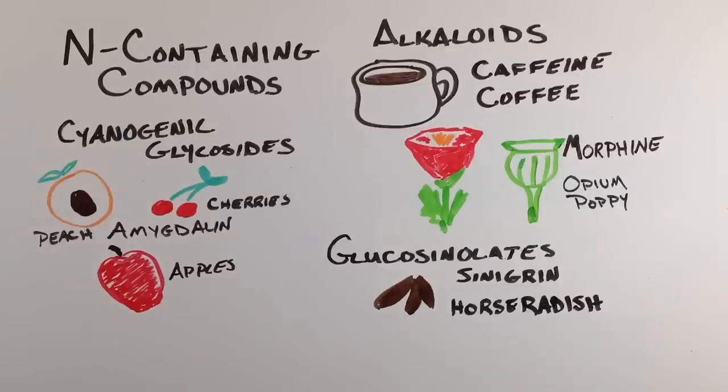Glucosinolates, such as sinigrin, found in horseradish and many mustards, also affect the digestive tract but have a particularly strong effect on scent and taste.